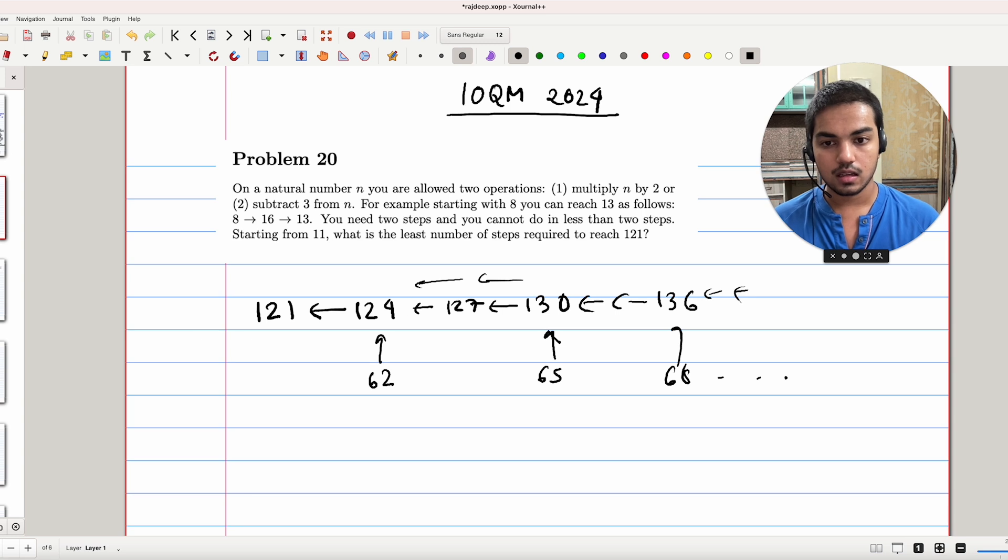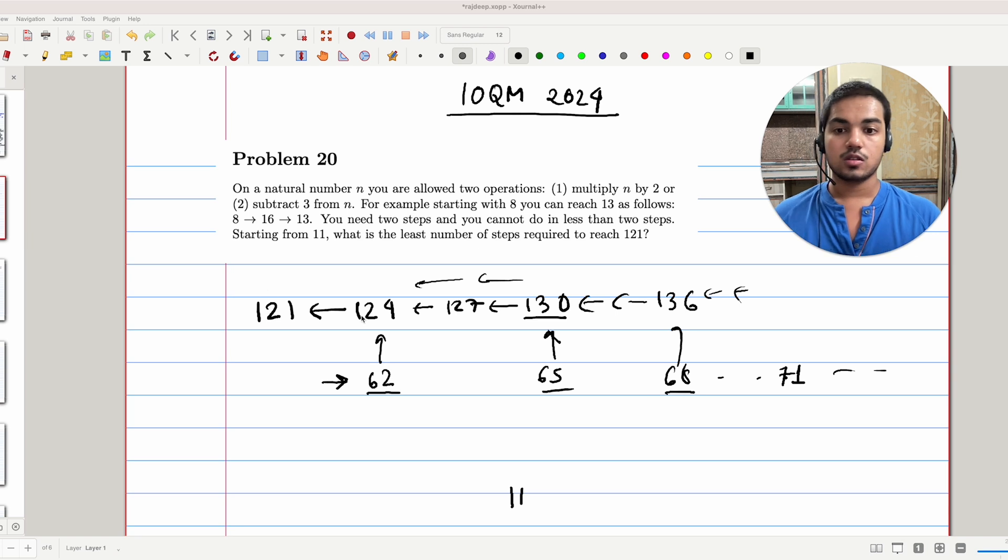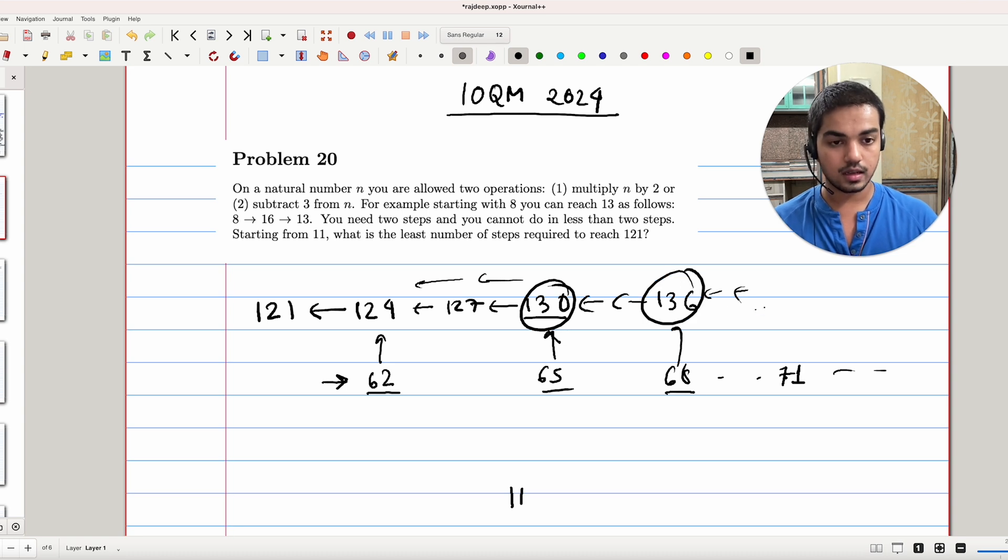One thing is evident: if you want to reach 124 from a number smaller than 124, in our case 11, it's clear that your choices are kind of restricted in that you'll have to reach a number in this list at some point. To reach 136, you either reach 68 or reach 71 and so on. So to reach 124, even if you go by the 130 route or the 136 route and so on, no matter where it is easier to go, you know that you first have to get to a number in this row.